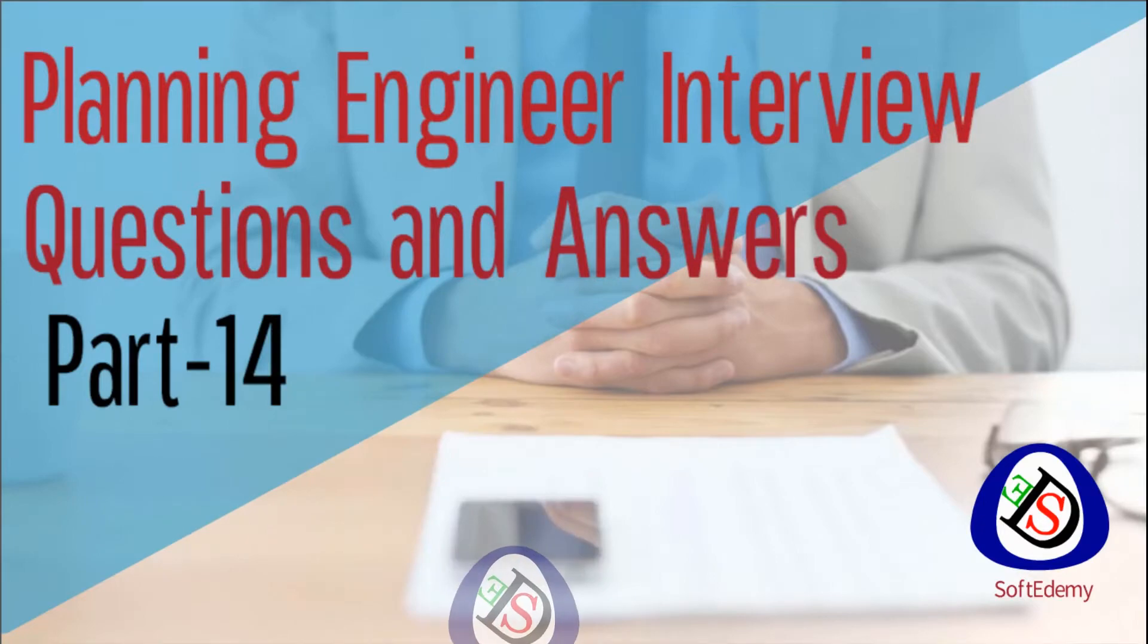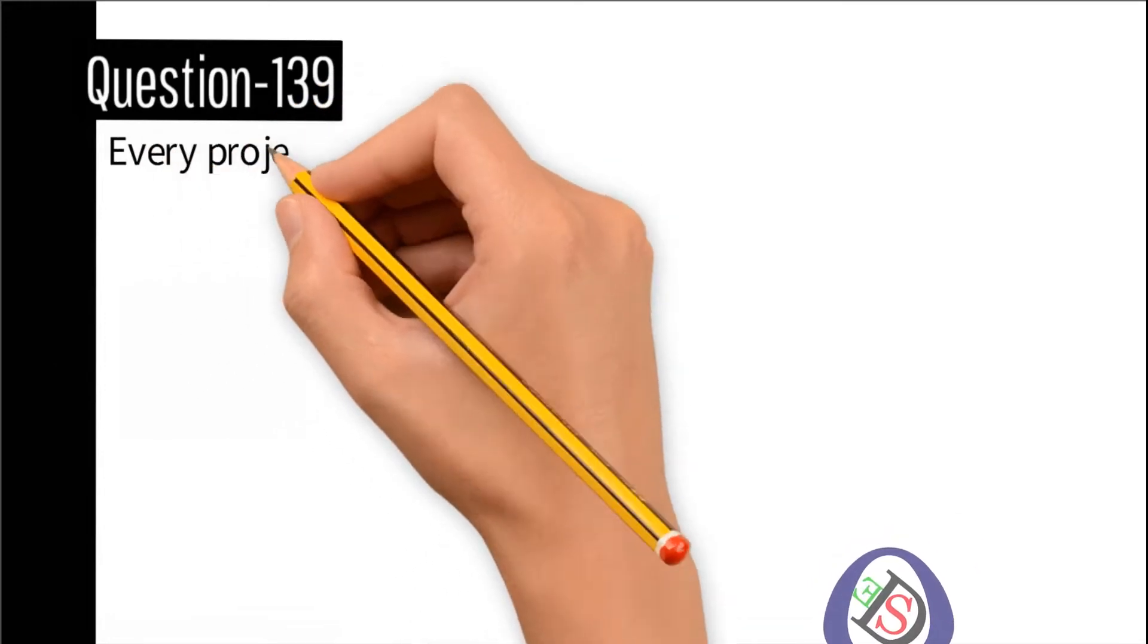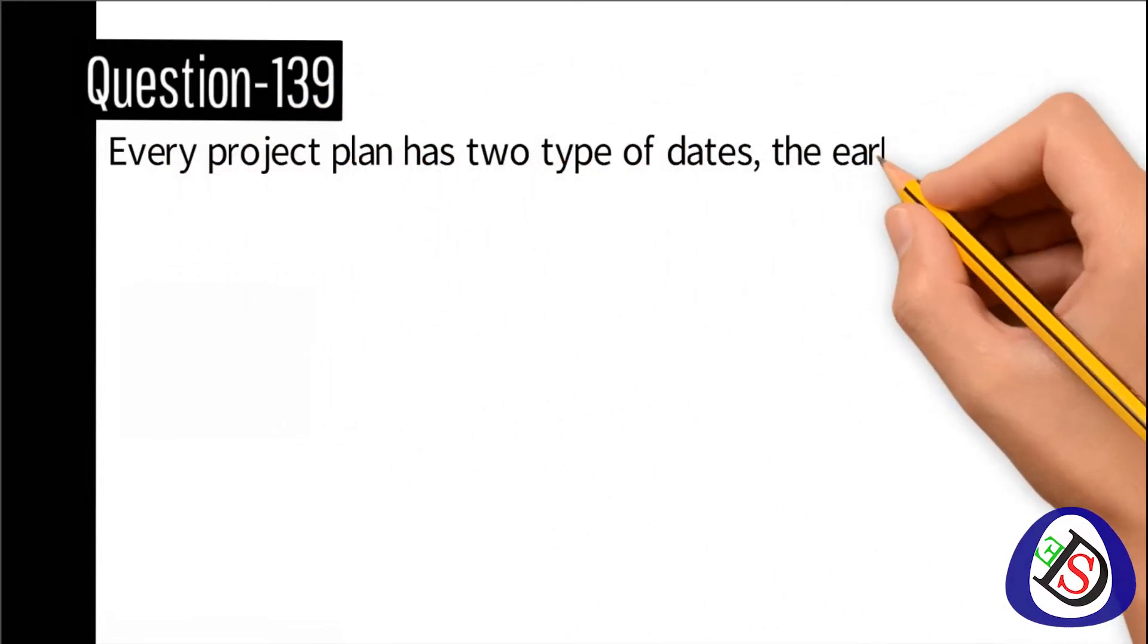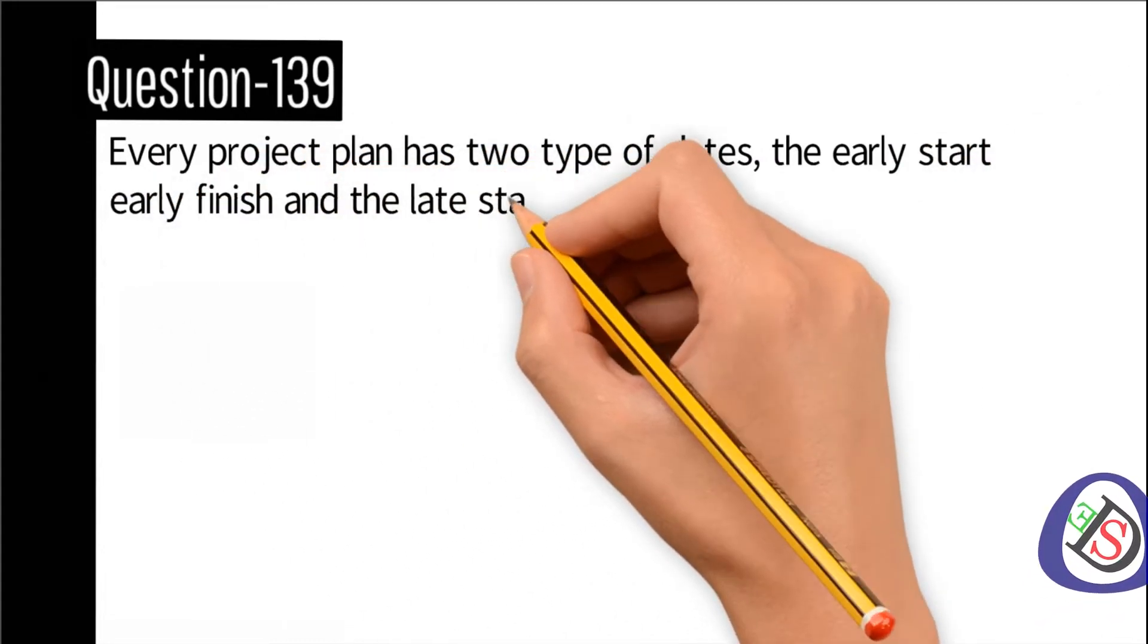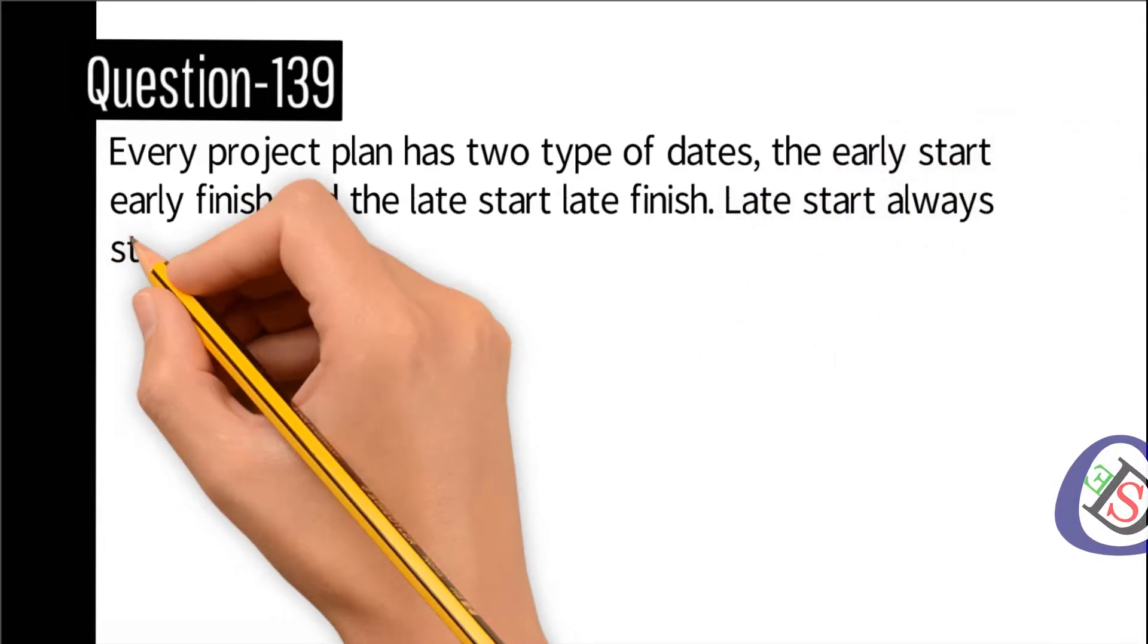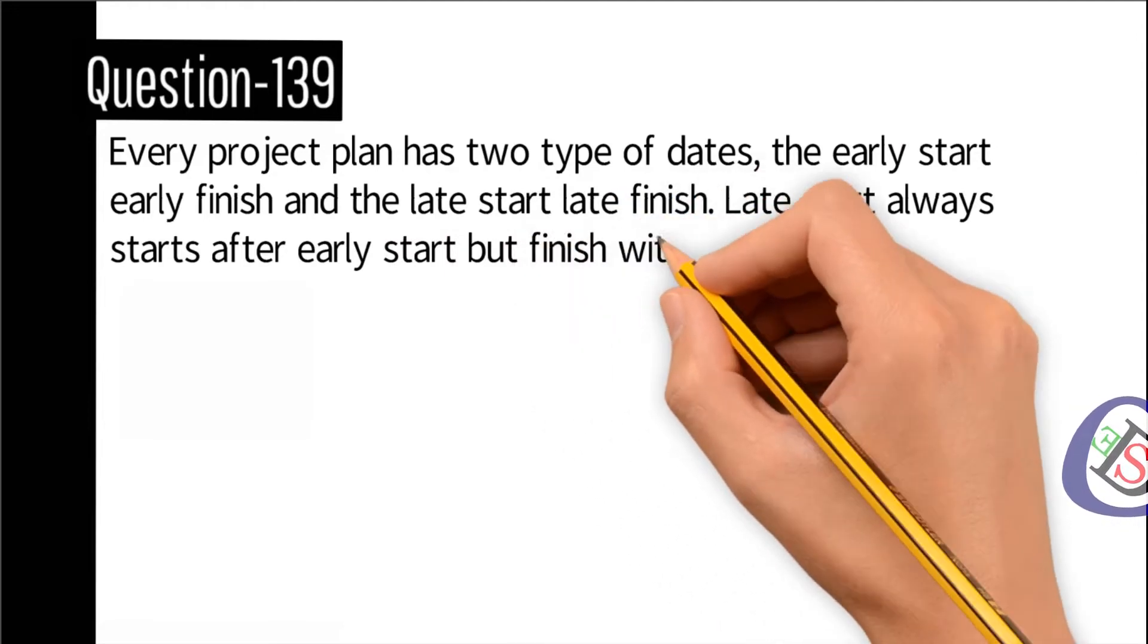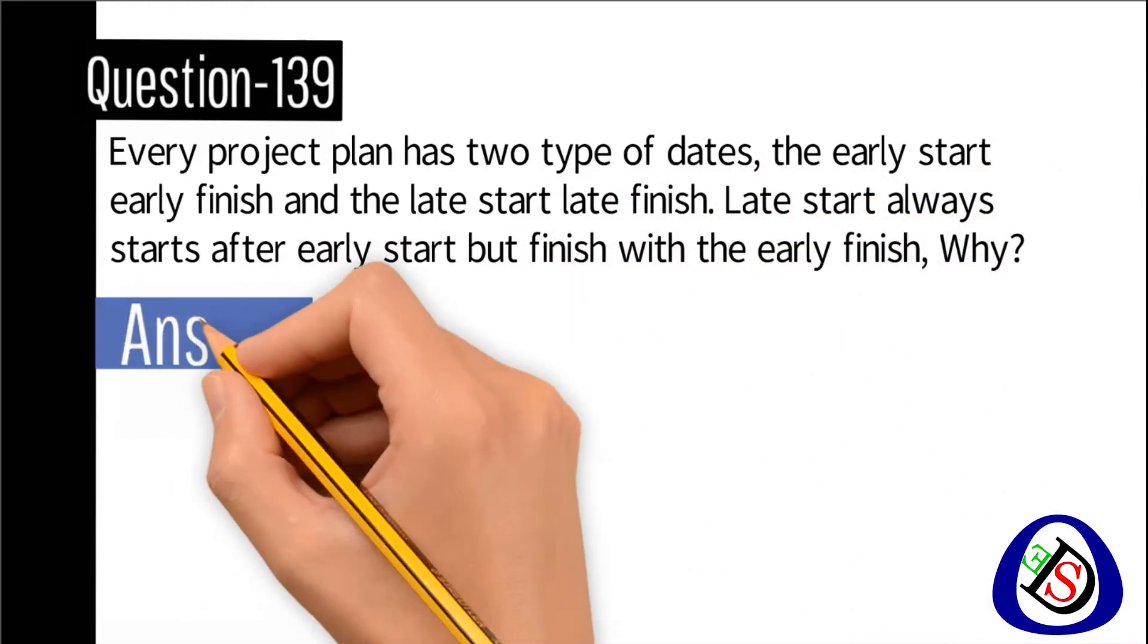Question number 134: Every project plan has two types of dates, the early start early finish date and the late start late finish. Late start always starts after early start but finish with the early finish. Why?